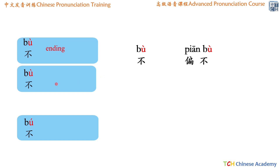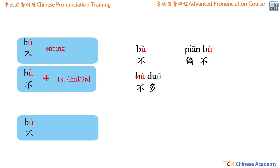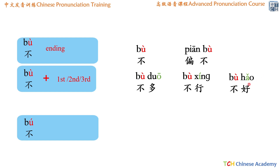The other situation is if the character 不 is followed by a first tone, second tone, or third tone, it is still pronounced bù. For example, followed by a first tone: 不多 (bù duō), meaning 'not much.' Or a second tone: 不行 (bù xíng), meaning 'it won't work' or 'it's not okay.' And followed by a third tone: 不好 (bù hǎo), which means 'not good.'